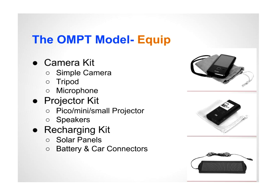We bring three different types of kits. The camera kit includes a simple video camera — like this Kodak, or similarly an Android or iPhone. We strongly advocate the use of a tripod to stabilize the camera, since camera movement creates poor video. An external corded microphone that clips onto the clothing and plugs into the phone or camera gives really high-quality audio. That's the camera kit.